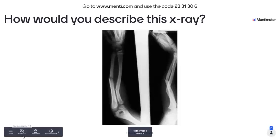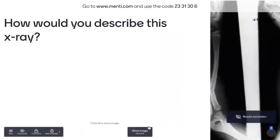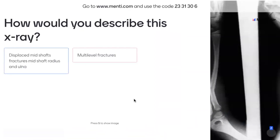We've got a displaced mid-shaft fracture of the radius, multilevel fractures, a mention of the proximal third of the radius. I think it's really important whenever you're describing any x-ray to document whether it is proximal, distal, or middle — because that has implications for how you might manage these fractures and when you're sharing that.